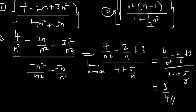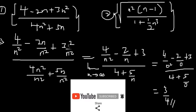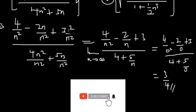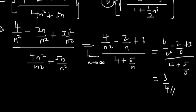In future videos I'll be showing you how to arrive at the limit of a sequence without going through all the division steps. Once you're a subscriber with post notifications on, you'll get that video when it's uploaded. This first sequence was a convergent sequence with limit 3/4. Now let's take the second example.